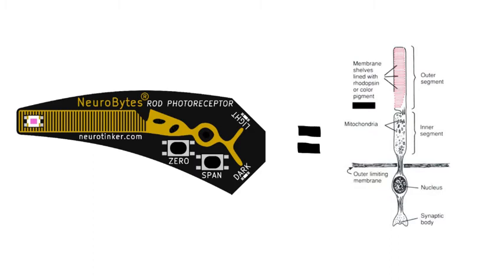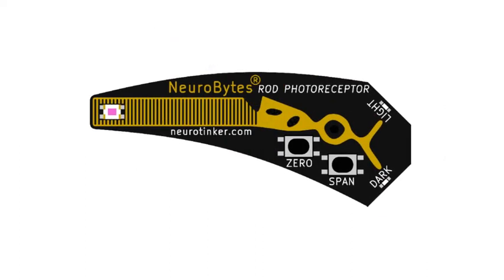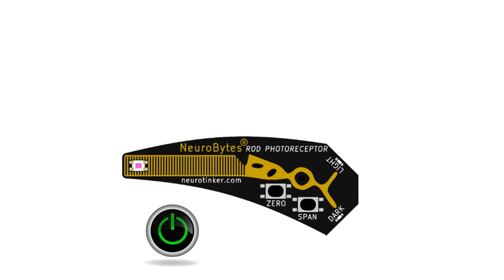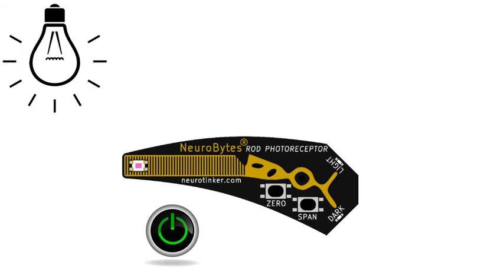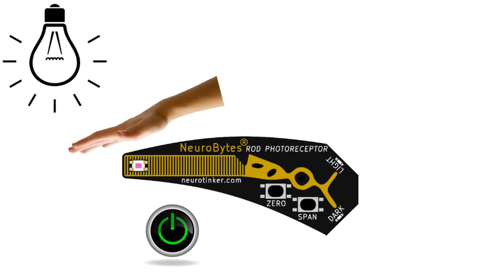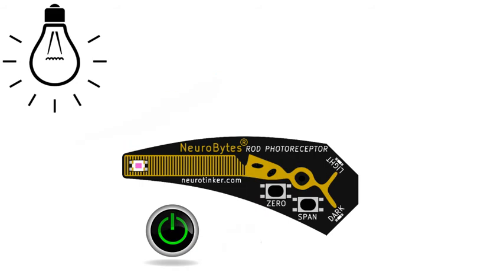Your rod simulators also have a way to adapt to different lighting settings. Power up one of your rod simulators with your battery pack and power cable. It should be located in a part of your room with normal lighting. To set the minimum amount of light that your rod will respond to, hold your hand an inch or two above the light sensor to block most of the room light and press the zero button. To set the maximum amount of light, move your hand away, exposing the sensor to full light, and press the span button.